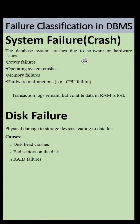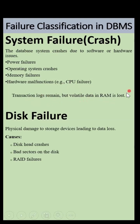The next classification is system failure, where the database system crashes due to software or hardware issues. Examples include power failures, operating system crashes, memory failures, and hardware malfunctions like CPU failure. Transaction logs remain to enable recovery — the transaction logs are written on persistent storage like HDDs, SSDs, or separate log servers as write-ahead logs, so recovery can happen from them.